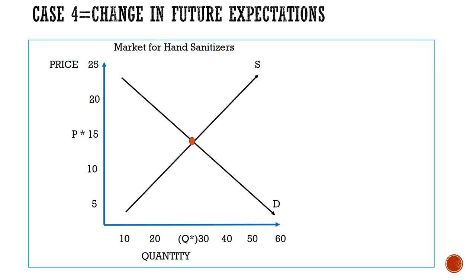Let's analyze the market for hand sanitizers. Due to the outbreak of disease, people prefer hand sanitizers and the price has raised, and it will tend to aggravate more in the future. So you will choose to provide the commodity less today. When you choose to supply less, the supply curve moves towards the left. At the new equilibrium, you notice a higher price and a fall in quantity.